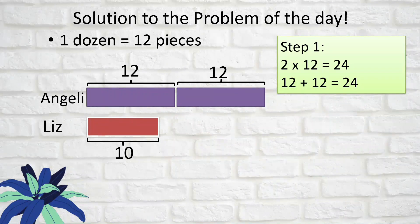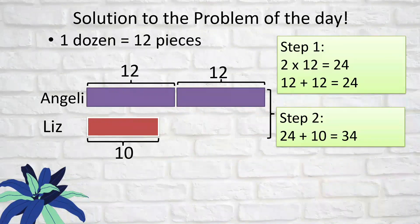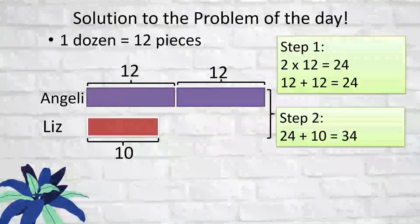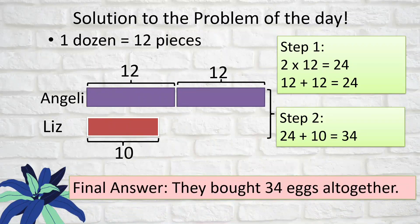To get the final answer, we add all the eggs they bought together. That's step two: 24 plus 10 equals 34. Some of you might say you can answer that in one step — yes, you can just add 12 plus 12 plus 10. There are different ways to find the answer; I'm showing you steps so that you have a guide in solving problems. The final answer is they bought 34 eggs all together.